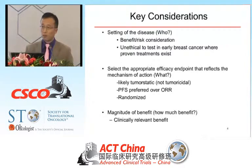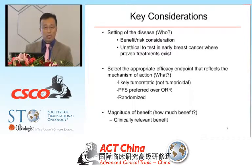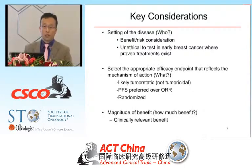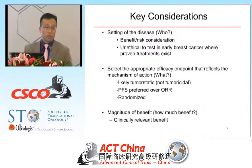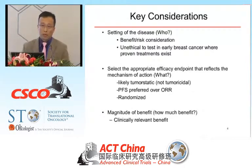In addition to the data limitations, we also took other factors into consideration when designing this trial. First, what is the appropriate disease setting to test this drug? Given that it has no proven benefit in breast cancer but has proven toxicities in cancer patients, this dictates that we go to a patient population that has no further standard of care available. Second, what is the appropriate primary endpoint to define therapeutic benefit? Since we believe this is probably a tumor static agent, we do not expect substantial response rates. Therefore, we propose progression-free survival as the primary endpoint in preference over objective response rate.